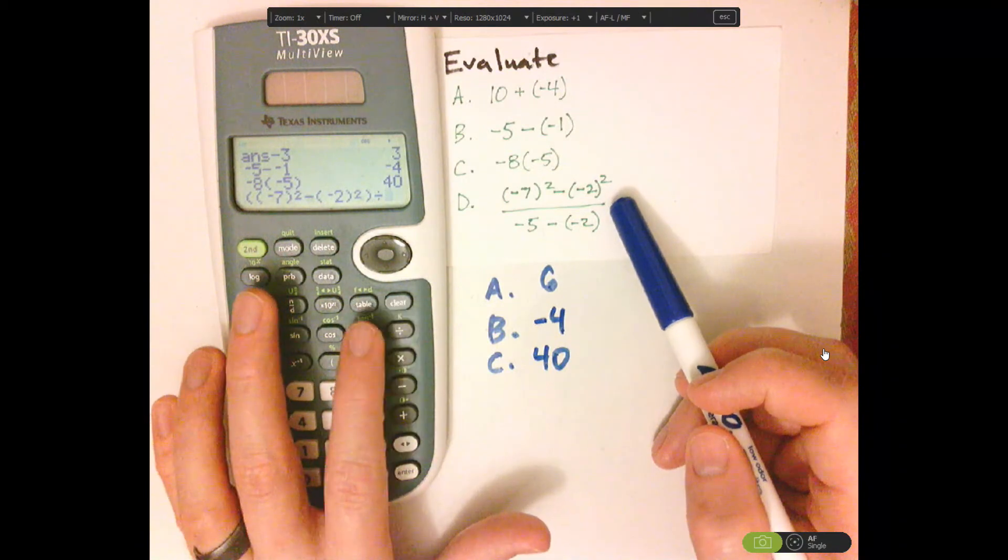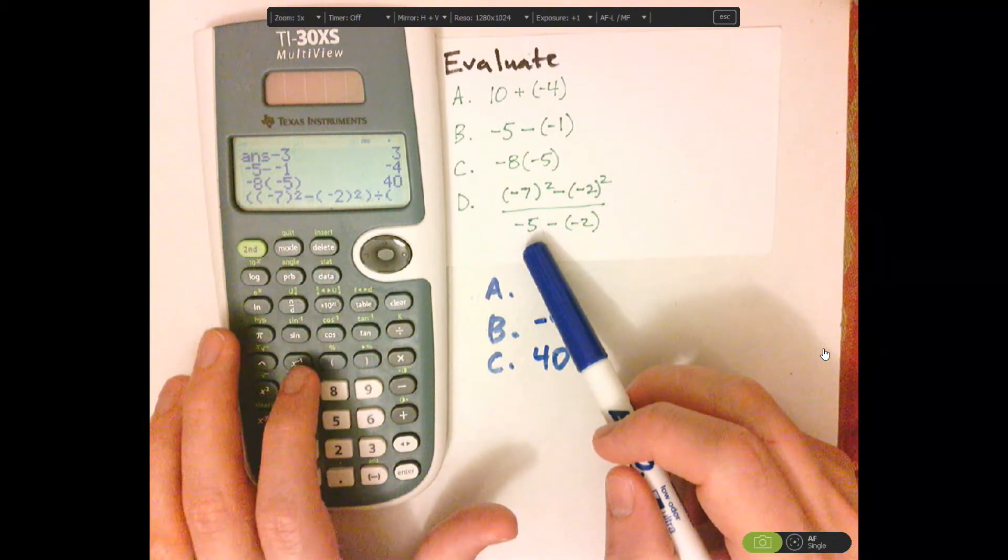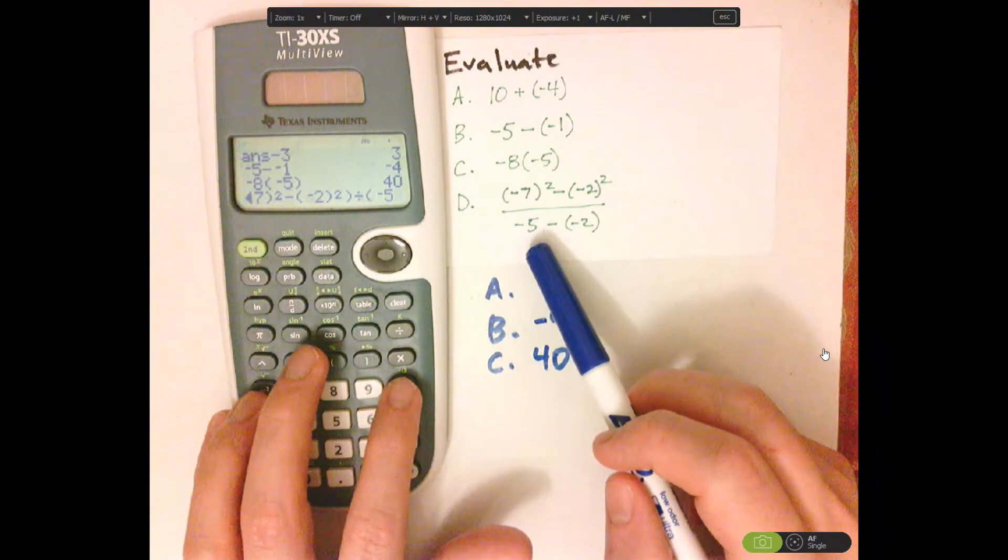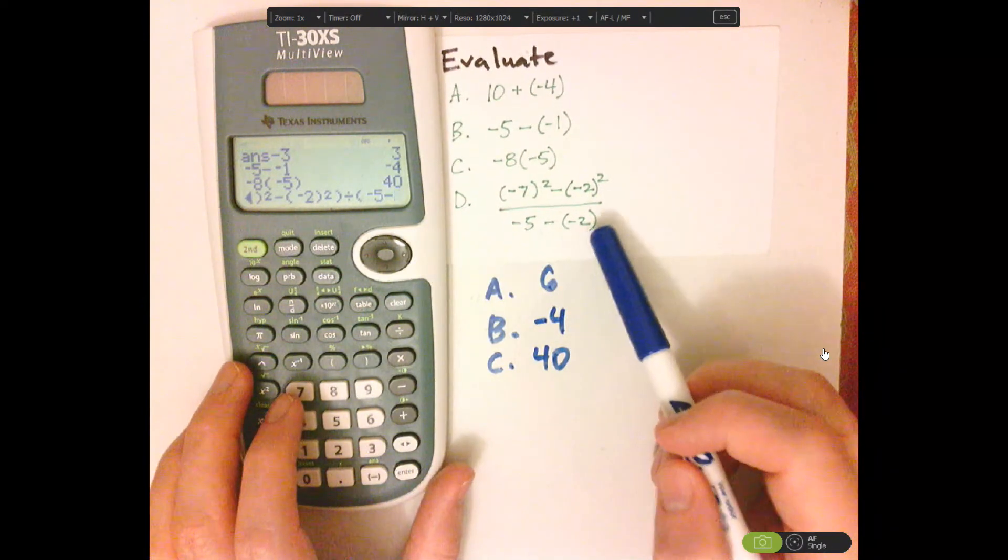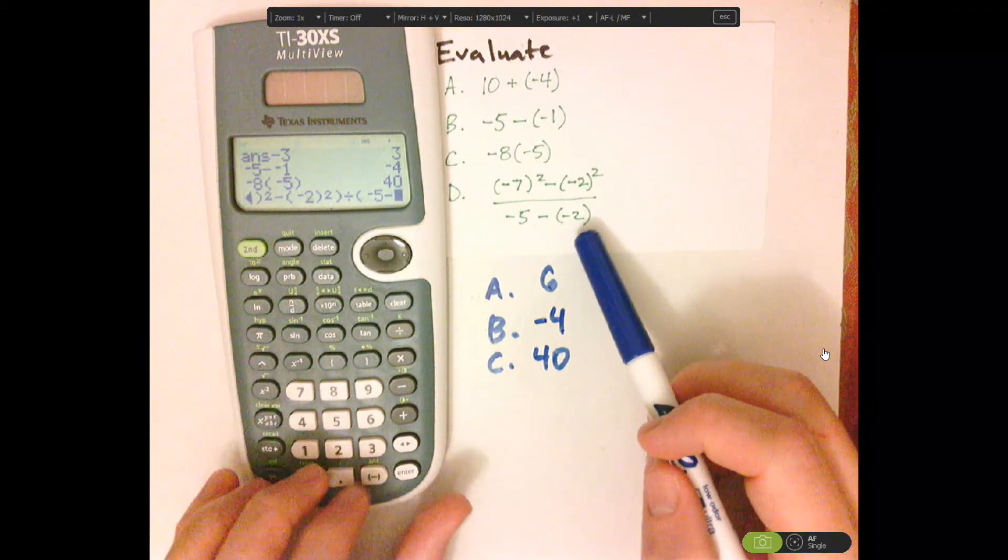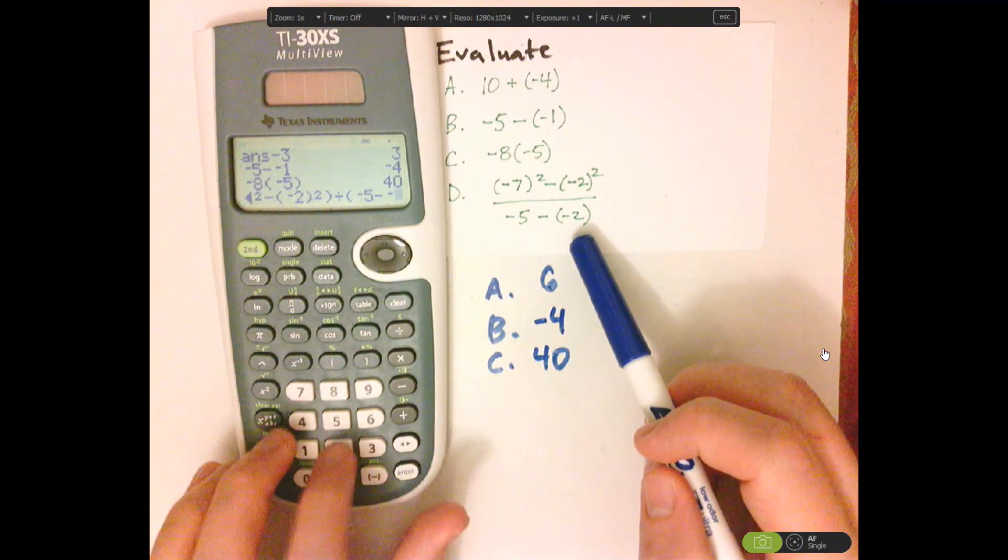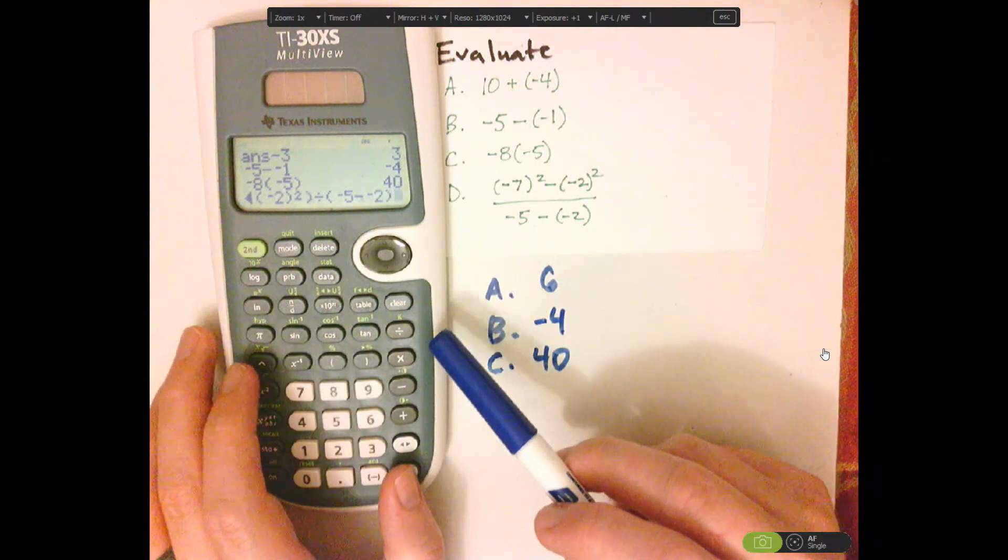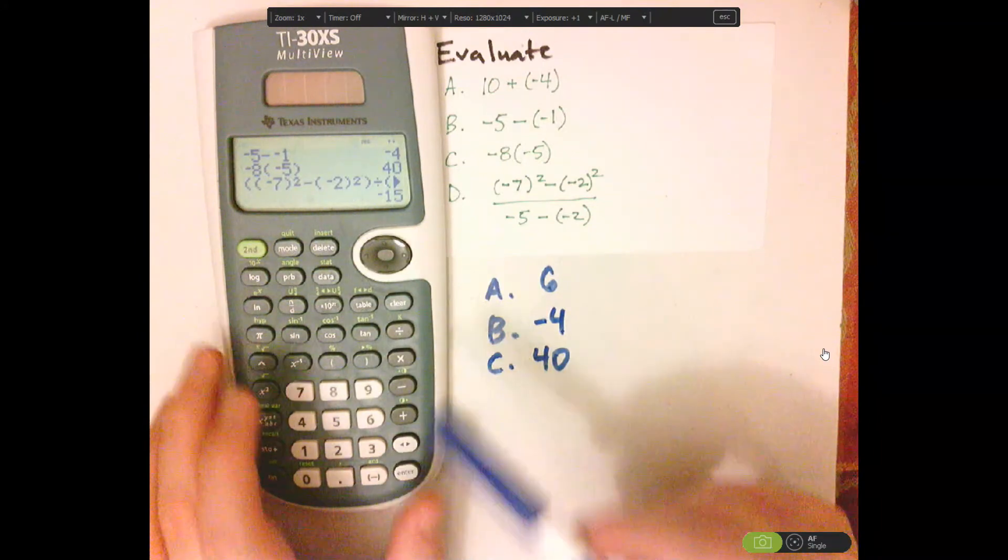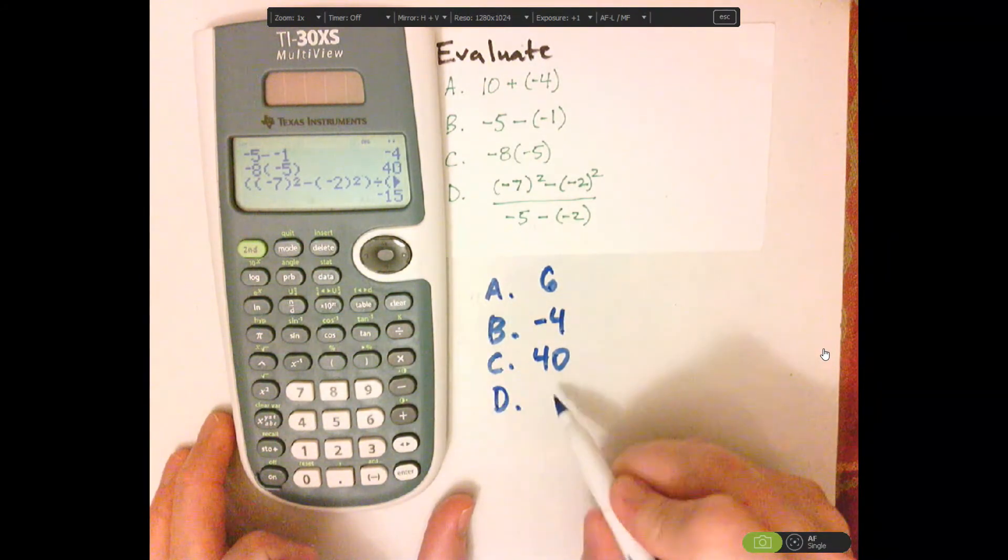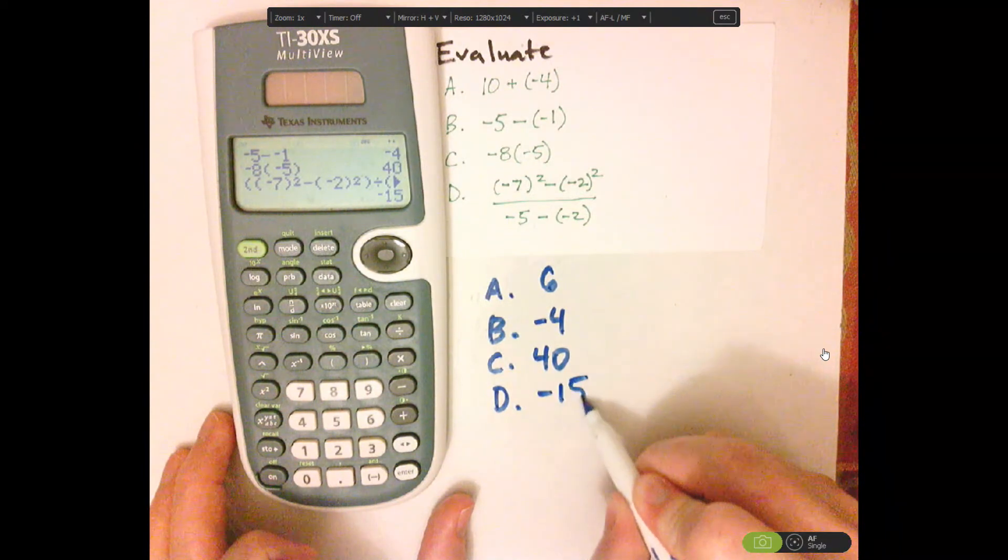Divided by parentheses for the denominator, negative 5 minus, and here I don't have to put parentheses. So I can put negative 2, and then close the parentheses, and then enter. And so letter D is negative 15.